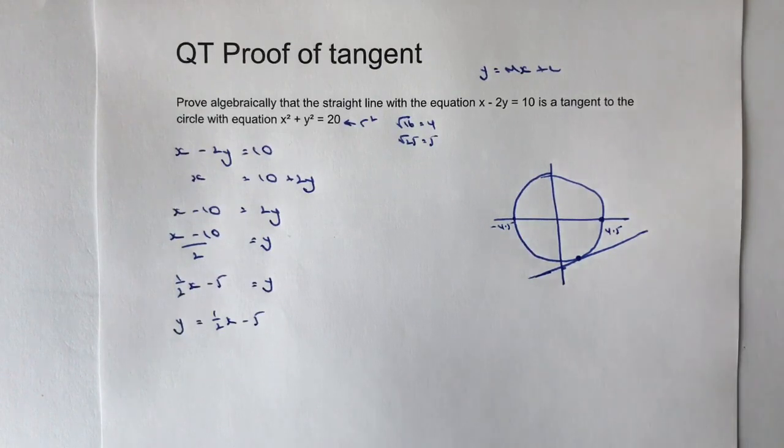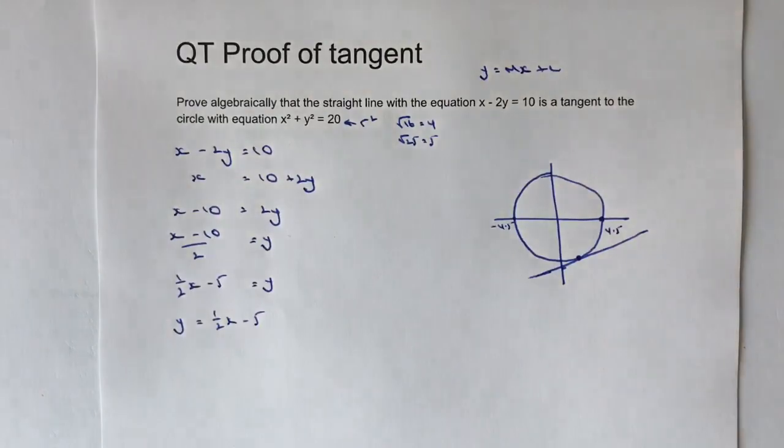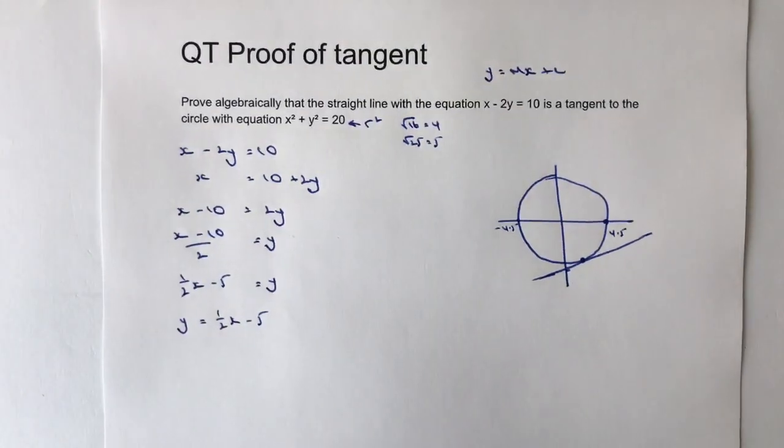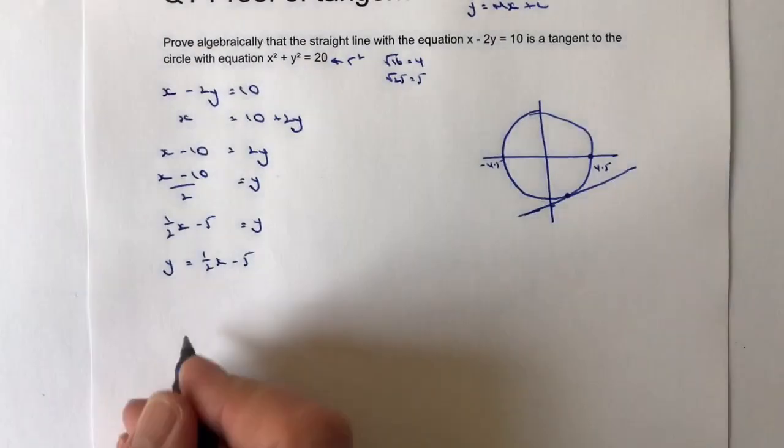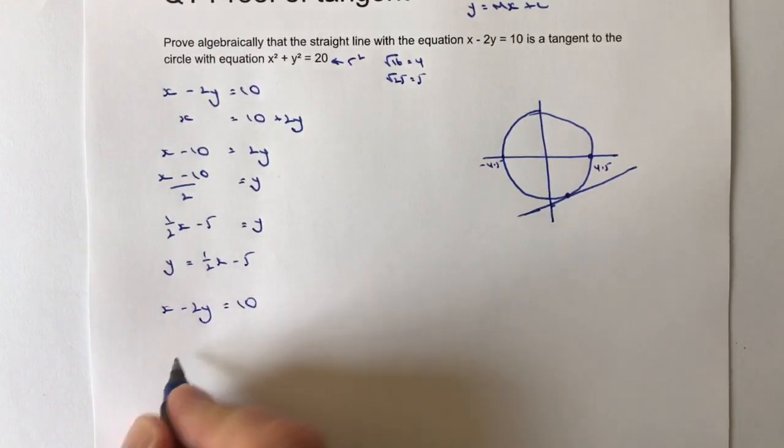A couple more things I'm going to do: I know the equation is x squared plus y squared equals 20 for the circle. I can also say by rearranging this that I can get myself a value of x. The way I'm going to do that is I'm going to say, well actually, if I want a value of x rather than writing it as x minus 2y equals 10, I can write x equals 10 plus 2y.